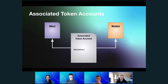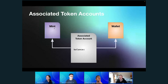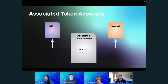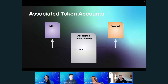Instead, you have a separate account called an associated token account. That token account points to the mint it's for and the wallet it's associated with, and it tracks the balance — that's literally all it's designed to do. It's an intermediate account that says: here's the wallet I'm for, here's the mint I'm representing, and here's the balance of that mint in this wallet. When you create a new token you can create a new associated token account, and so on.